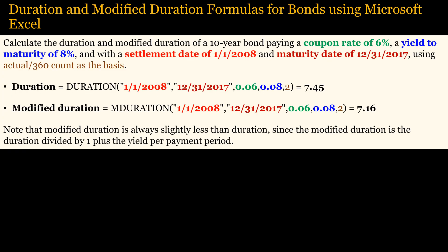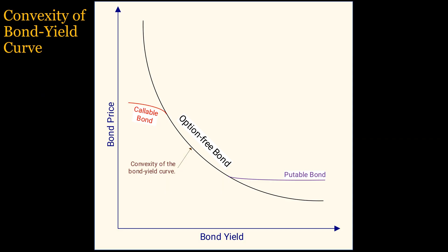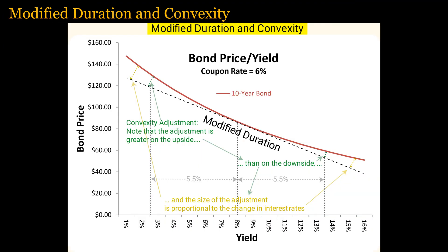This screen shows two examples of the Excel formulas for Macaulay duration and modified duration — freeze the screen if you want to study them in more detail. This graph shows that the bond price-yield relationship is convex, so bond prices calculated with duration will become less accurate with larger yield changes. Note also that duration is not valid if the change in yield would cause a change in cash flows, such as making a callable bond more likely to be called.